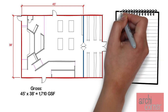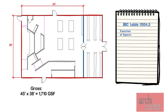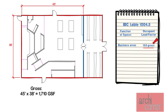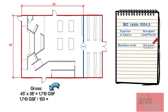Now that we have the square footage, we must figure out what load to use to determine the occupancy, so we look at IBC Table 1004.5. If this space was being used for office, we look at the table and find that business areas have a load of one occupant per 150 gross square feet. Because we have not subtracted anything from this square footage, 1,710 square feet is our gross square feet. Therefore, our occupant load would be 1,710 divided by 150, which equals 11.4 — and since we always round up for occupancies, we have 12 occupants.